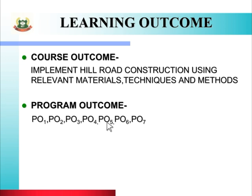The program outcomes covered are PO3, PO4, PO5, PO6, and PO7, which include: basic and discipline-specific knowledge, problem analysis, design, development of solutions, engineering tools, experimentation and testing, engineering practice for society, sustainability and environment, project management, and lifelong learning. You will study all of these program outcomes.